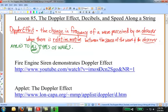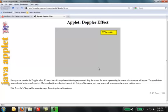There's an applet here, called the Doppler effect, that graphically illustrates what's going on. Just click anywhere within the gray area and drag the mouse. An arrow representing the source velocity vector will appear. Let go of the mouse and your source will move across the screen, emitting waves.